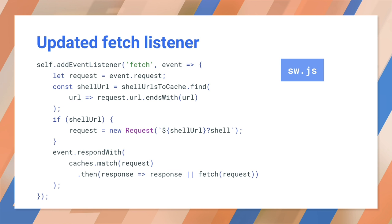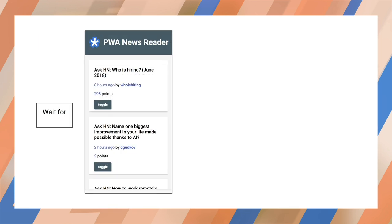The last step is to update the fetch listener. Here we check each request to see if it matches one of the shell URLs to cache, which in this case just represents our home page. If we find that the request is one of those shell resources — again, just the home page in this example — we append the shell query string to the request before we handle it with respond with. Our respond with call then works just like it did before, checking the cache for the resource first. Now when the home page loads, the service worker will fetch the empty shell from the cache instead of fetching an outdated server-side rendered page, which also isn't even cached in this case, thanks to our updated pre-caching logic.